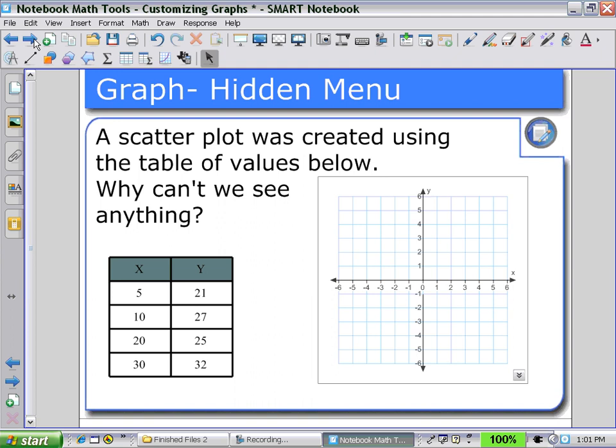Here's an example. A scatter plot was created using the table values below. Why can't we see anything? Looking at the ordered pairs, we realize that our points are not on the grid.